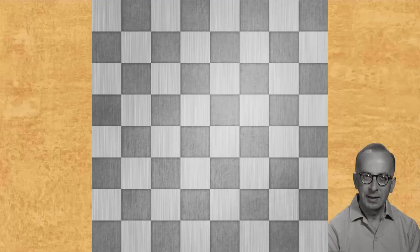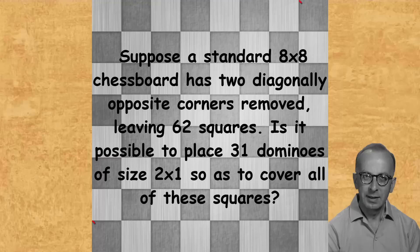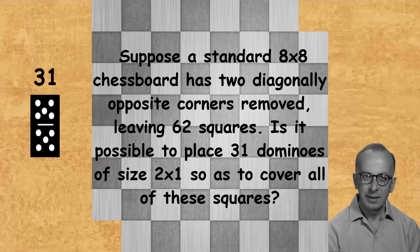It's the mutilated chessboard problem. This is a tiling puzzle proposed by the British-American philosopher Max Black in 1946 in his book, Critical Thinking. It runs as follows. Suppose a standard 8x8 chessboard has two diagonally opposite corners removed, leaving 62 squares. Is it possible to place 31 dominoes of size 2x1 so as to cover all these squares?